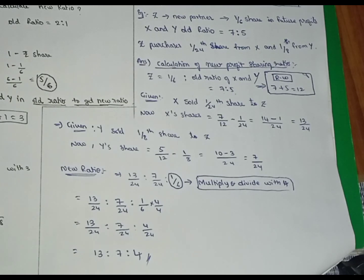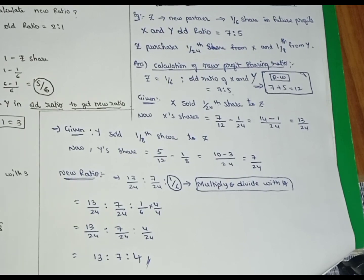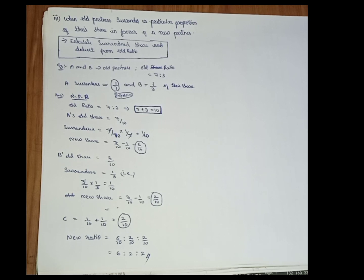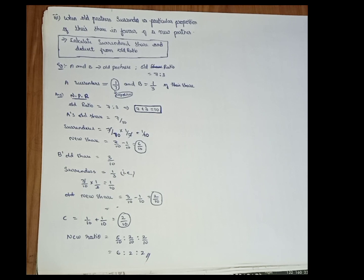The second case procedure follows the new profit sharing ratio with short questions and can be done very easily. Now let's go to the third case. The third case is when old partners surrender a particular proportion of their share in favour of the new partner.